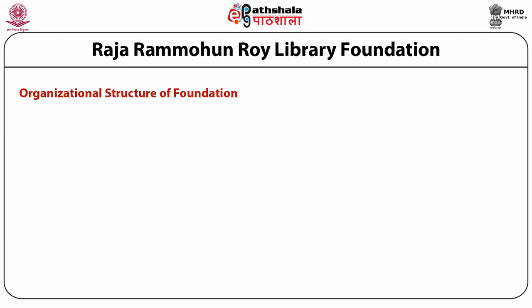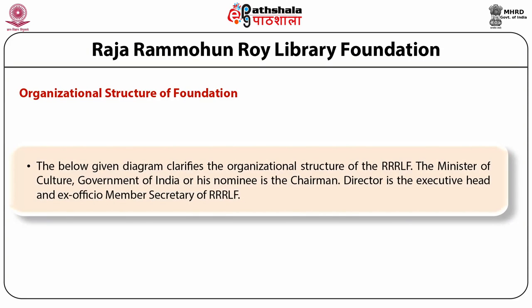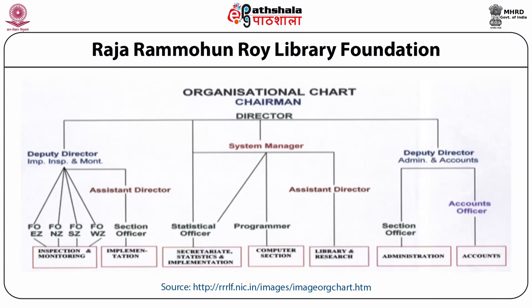Organizational structure of the Foundation. The Minister of Culture, Government of India or his nominee is the Chairman of Raja Raman Rai Library Foundation. The Director is the executive head and ex-officio member secretary. Under the Director are the Deputy Director, System Manager, and Deputy Director Administration and Accounts. Under the System Manager are the Statistical Officer, Programmer, and Assistant Director.